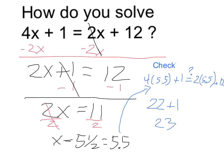4 times 5.5 is going to be 22, and 22 plus 1 is equal to 23. The left side of this is equal to 23. Let's see about the right side. 2 times 5.5 is 11,